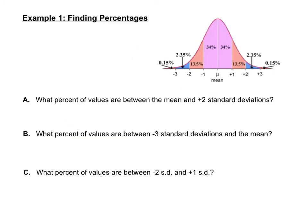Let's practice finding percentages. What percent of the data values are between the mean and two standard deviations above? We find that section of the curve and add those numbers together: from the mean to 1 SD above is 34%, and from 1 SD to 2 SDs above is 13.5%. So 34 plus 13.5 gives us 47.5%.